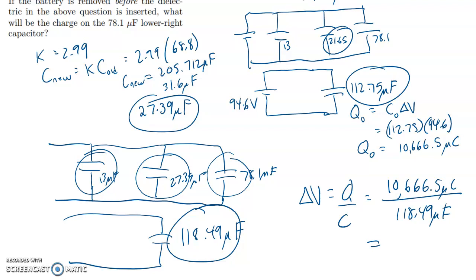So the charge which has stayed the same is 10,666.5 microcoulombs. But the new capacitance is 118.49 microfarads. So that gives us our new voltage of pretty much exactly 90 volts on my calculator, 90.0 volts. And again, since they're in parallel, that means that all three of these that you see here have that same voltage.